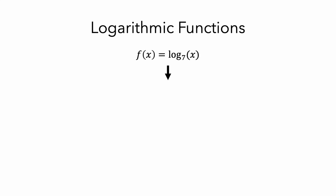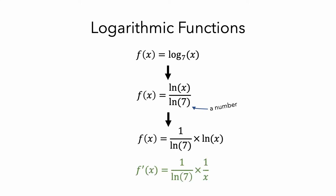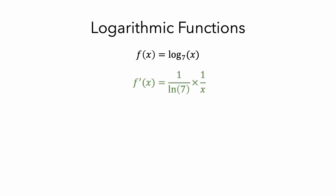There are also other types of logarithmic functions. For example, the log base 7 of x, where 7 is called the base. You might remember some of the rules for rewriting logarithms — this one can be rewritten as the natural log of x divided by the natural log of 7. Since the natural log of 7 is just a number, we can rewrite it as 1 over the natural log of 7 times the natural log of x, and the derivative is 1 over the natural log of 7 times 1 over x. This gives us a general rule for derivatives of logarithmic functions: the derivative of log base a of x is 1 over the natural log of a times 1 over x.